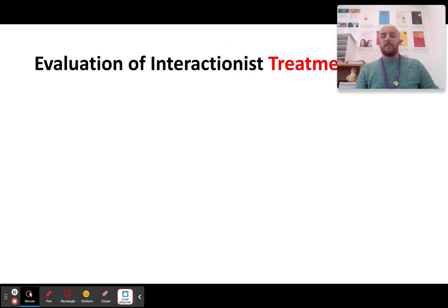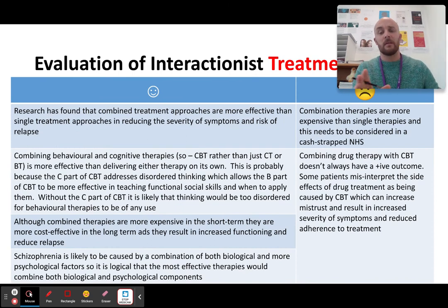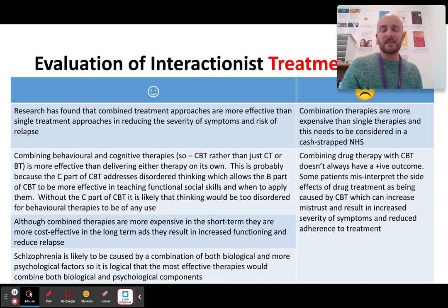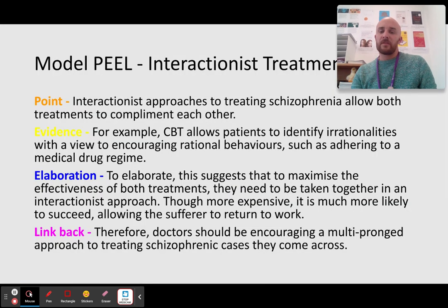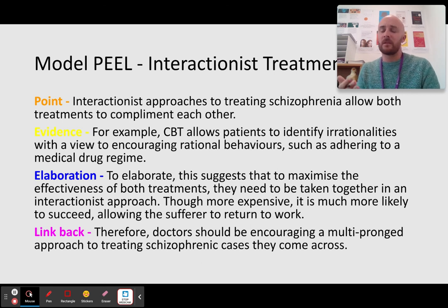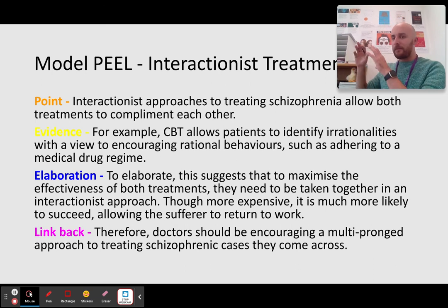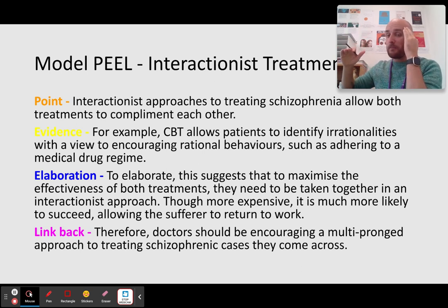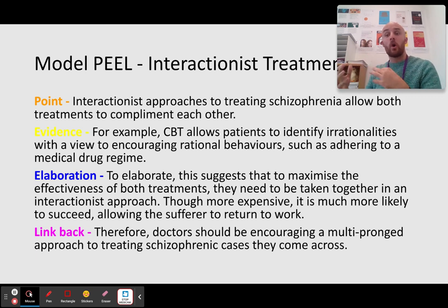The key point you need to know is that interactionist approaches are better because CBT is a more permanent treatment, but you cannot give CBT to people who are severely schizophrenic because they don't want to go — they don't see the impact, they don't have the motivation or determination. Give them antipsychotic drugs first. That will allow them to get to a place where they can start thinking more rationally, and then they think: okay, I need to go to therapy. So why interactionist approaches in treatment are so important is that they complement each other.